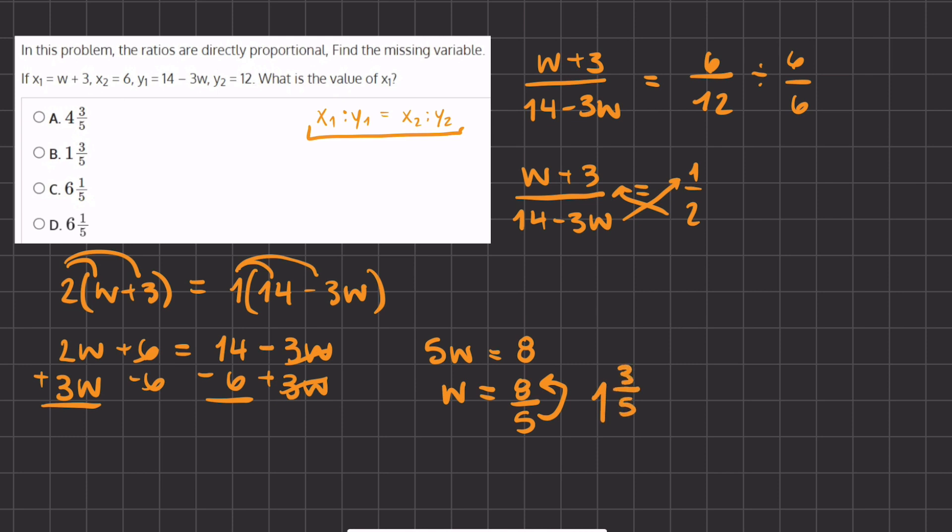Now let's take our value for w and plug it into our expression x1 to find the entire value of x1. So x1 equals w, and instead of w, we'll write 1 and 3 fifths plus 3. x1 equals the sum of these two numbers, and if we add the whole numbers first, we get 4 plus our fraction. So we will add our fraction 4 and 3 fifths, which will be our final answer.